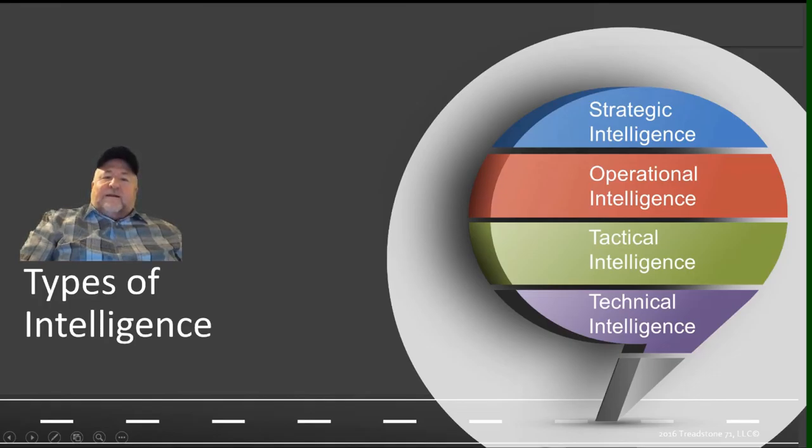Then we take it down to the technical intelligence where we really get to information that is more often data that is normalized, consumed through technical means. It can be your indicators of compromise, and a lot of your threat intelligence platforms focus mostly on these areas, although many of them also allow capabilities to enter information or pre-populate with adversary-type information of your TTPs. But most indicators of compromise is really your technical intelligence—your IPs, your hashes, and so on—the information you use for sightings in your environment.